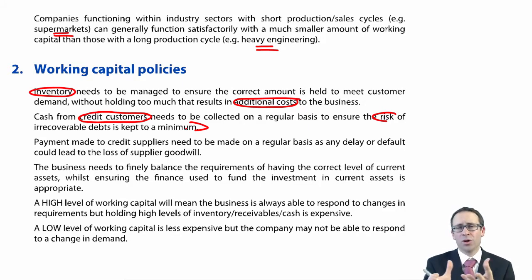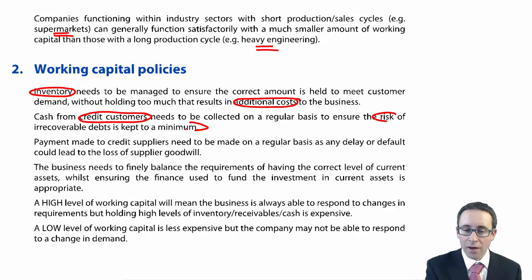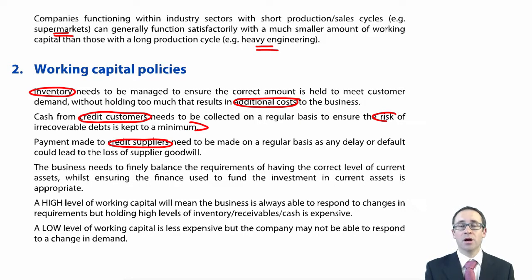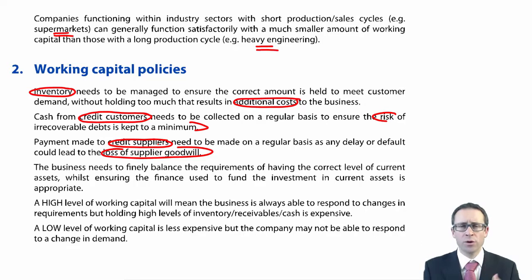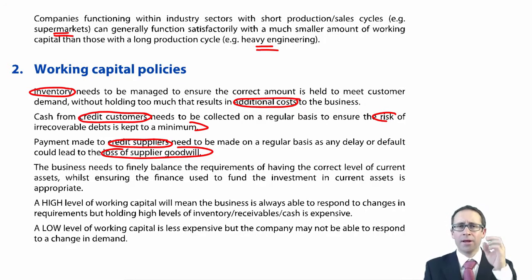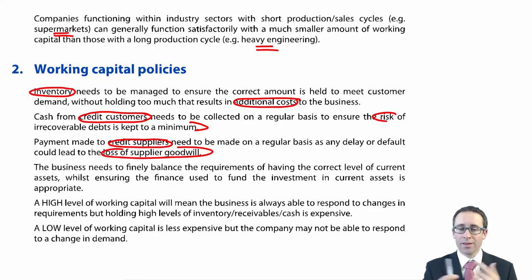Working capital management is all about striking the right balance between profitability and working capital — if you like, cash. Looking at your credit suppliers, you need to make sure payments are done on a regular basis, because if you don't, you could lose supplier goodwill. If you don't pay your supplier on time, they refuse to supply you; if they refuse to supply you, you can't make any more sales, and then you upset your customers when they come to place an order and you have no goods in stock.